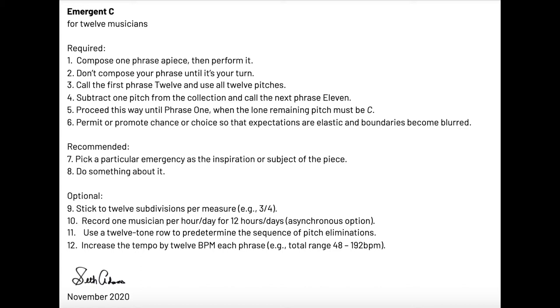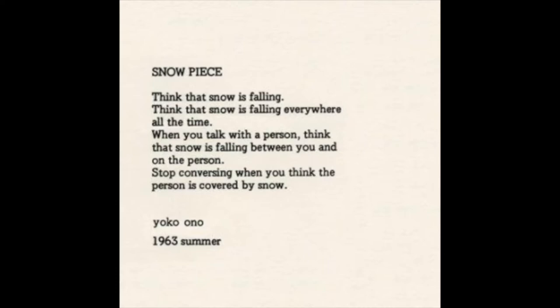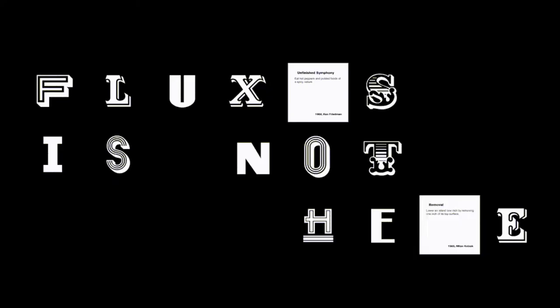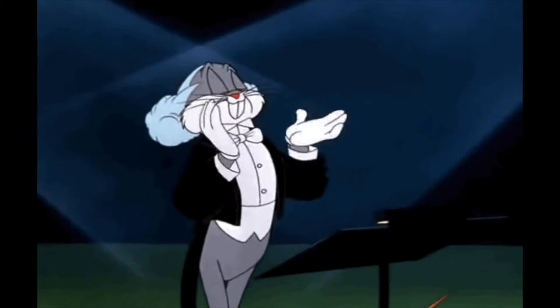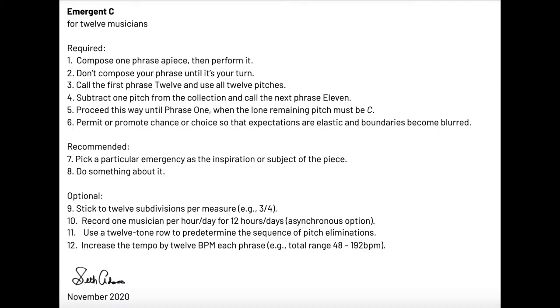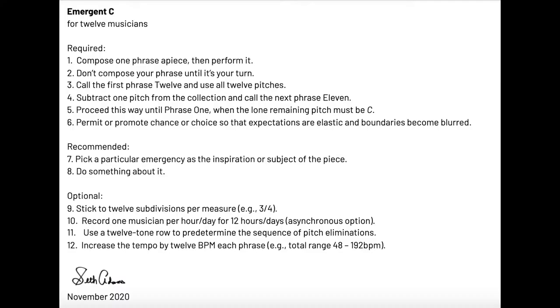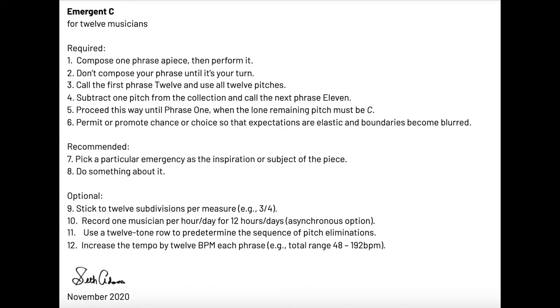Here's what we started with — just a set of instructions: six required, two recommended, and four optional. Text instruction scores like this first became popular in 1960s New York with composers like George Brecht, Yoko Ono, and Lamonte Young. That movement, started by George Machunas, was called Fluxus and called for art and music to become less product and more process, as well as less elitist and more broadly practiced. So this is in the tradition of the Fluxus score.